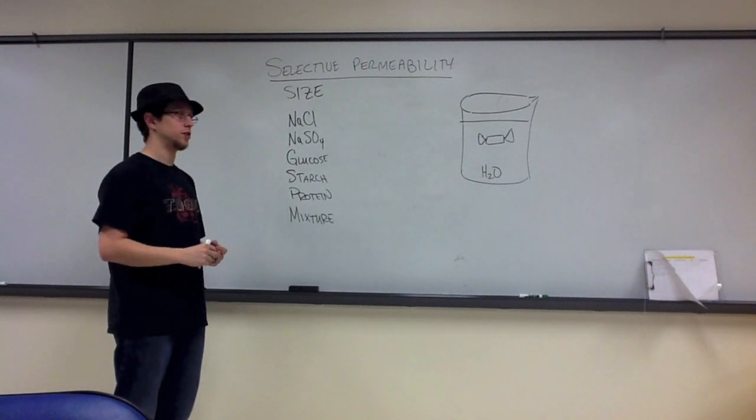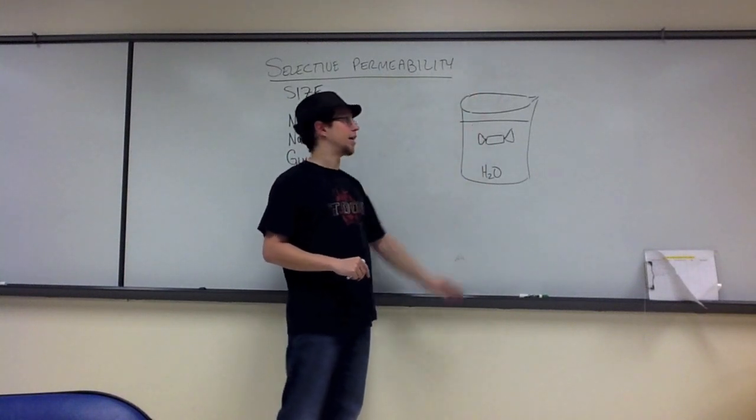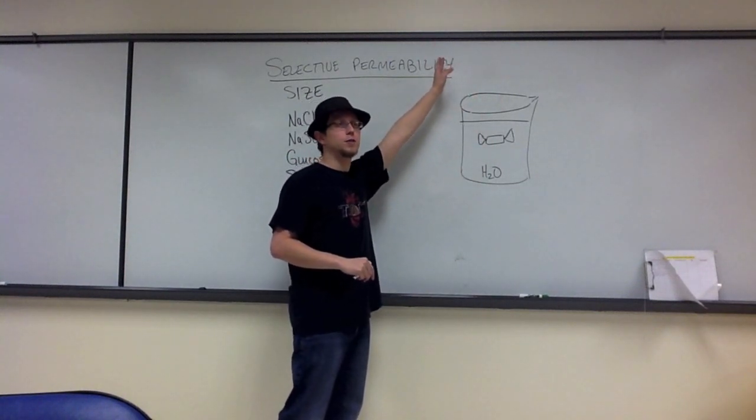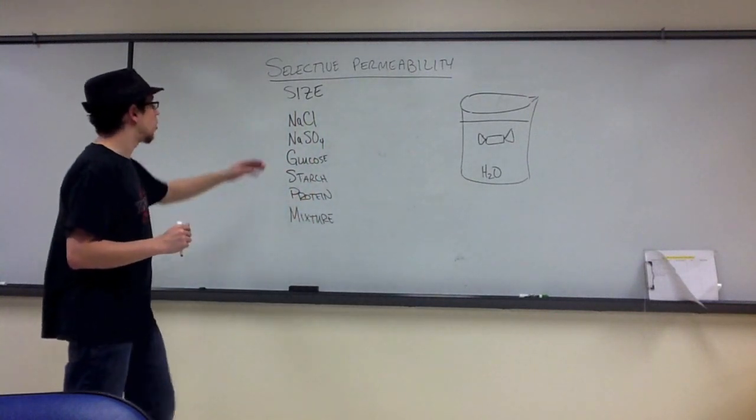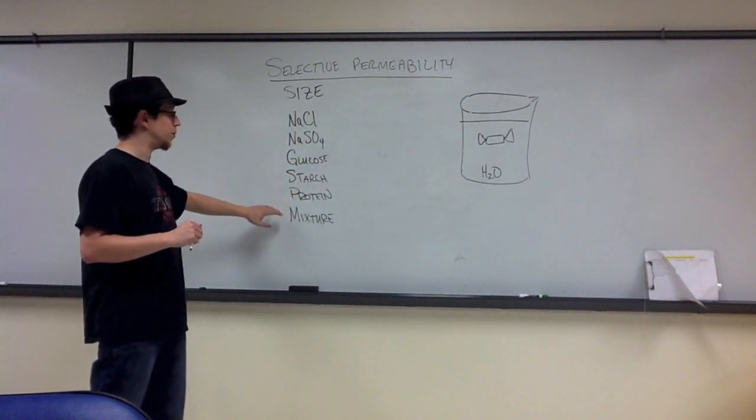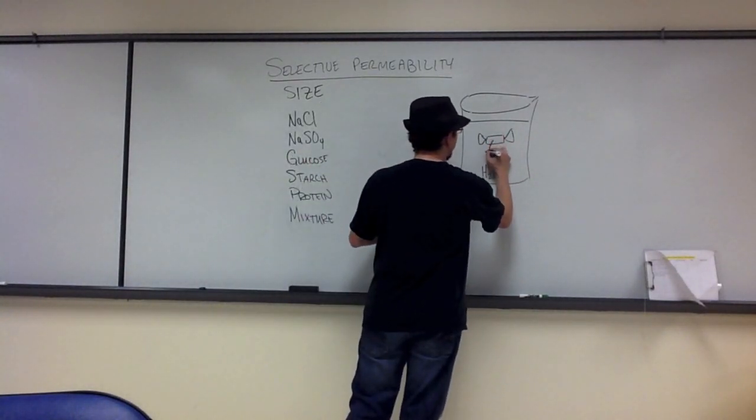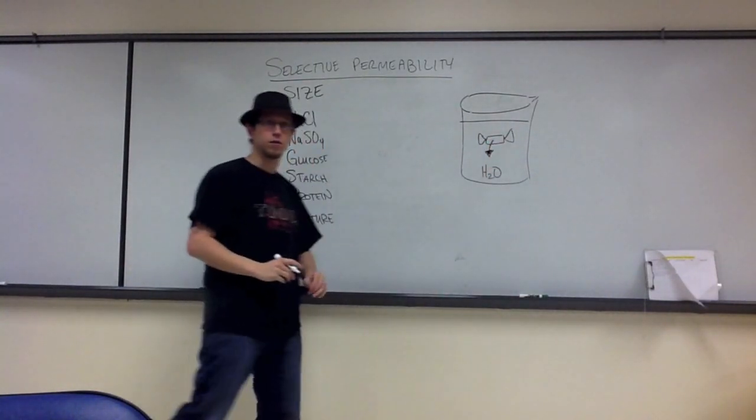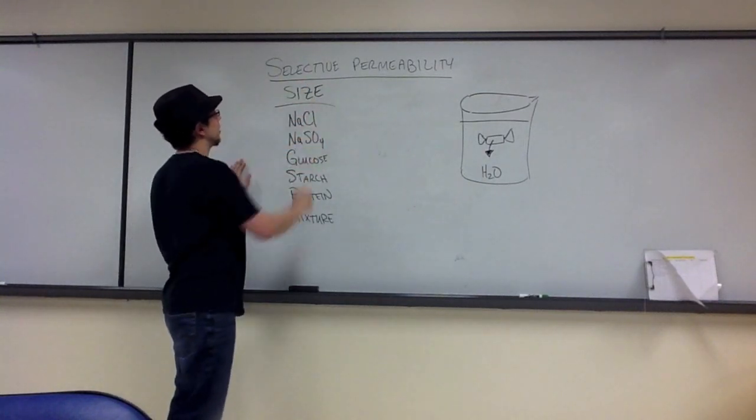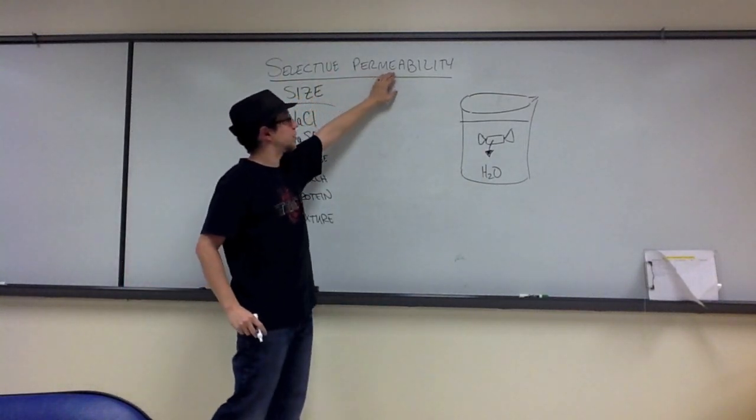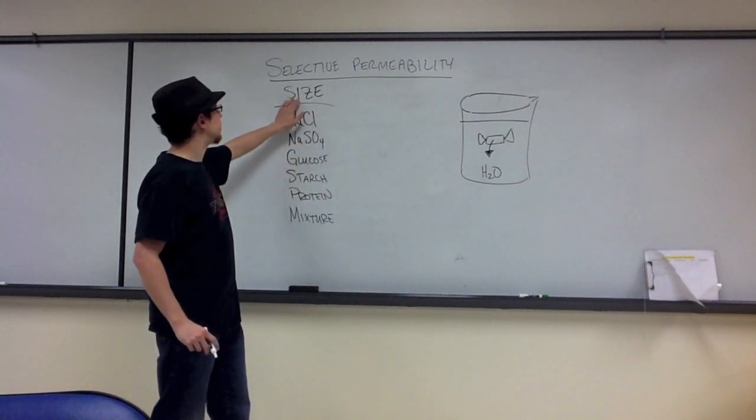At the end of the incubation time, you took the bag out and you threw it away, and you then drew up solution from this beaker. Because the question that you're asking in this is, which of these are capable of permeating this bag and coming out into the water of the beaker? So this bag, this dialysis tubing, is going to select from these different substances based upon their size.